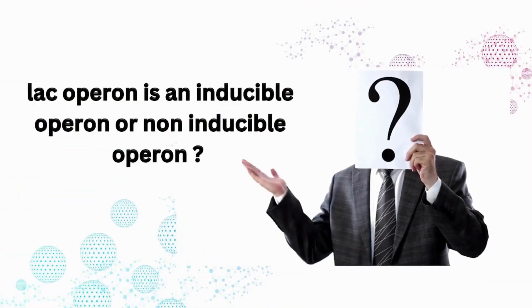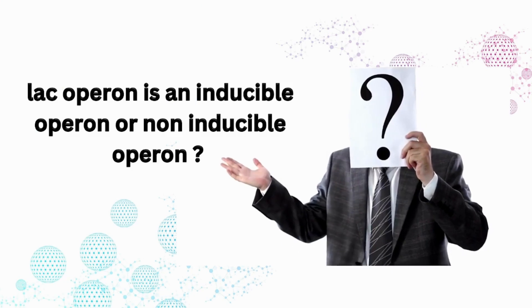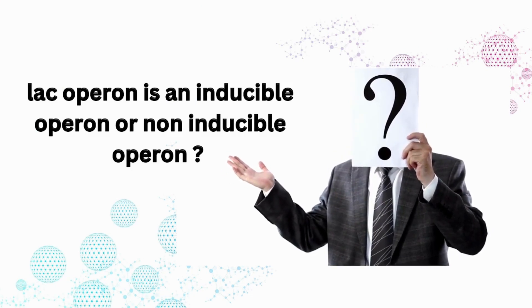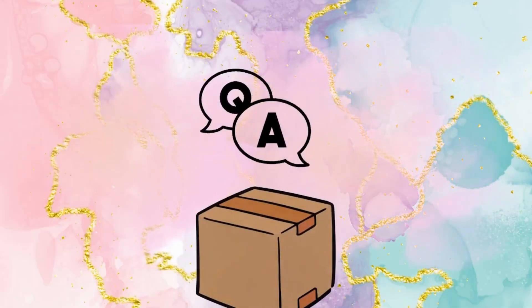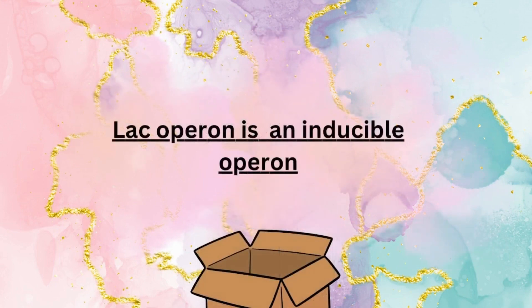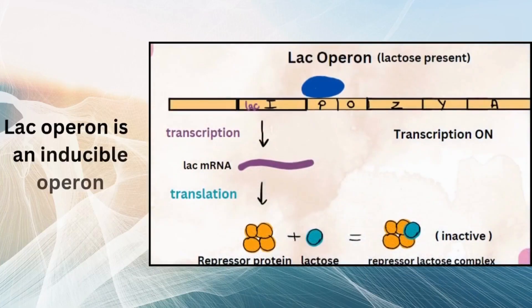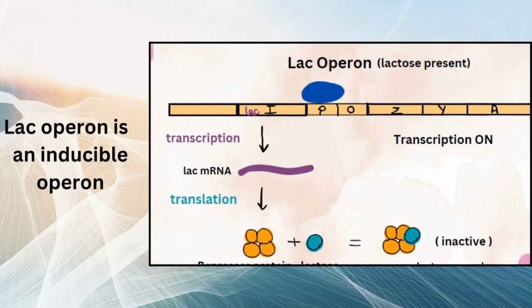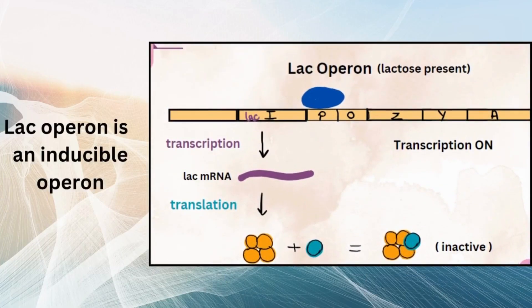Now let me ask you one question: whether lac operon is an inducible operon or non-inducible operon. The correct answer is that lac operon is an inducible operon. As mentioned earlier, lac operon is active only in the presence of lactose sugar. Lactose acts as an inducer, so the operon is an inducible operon.